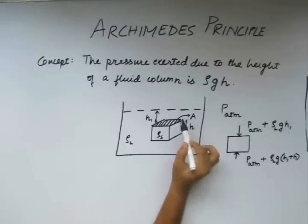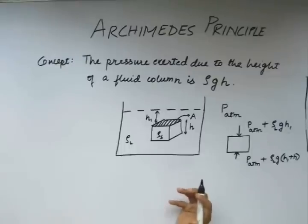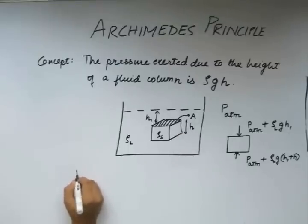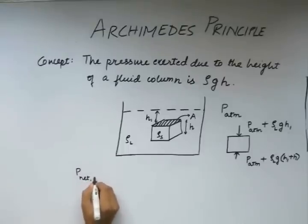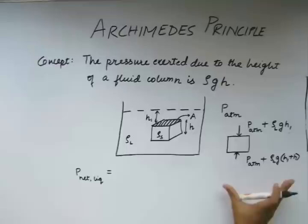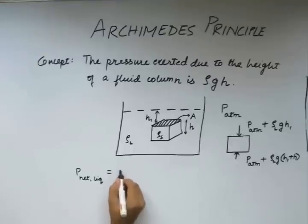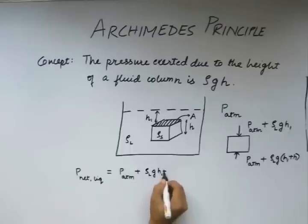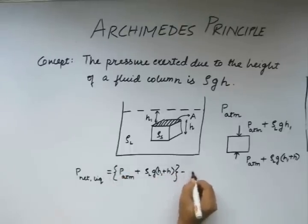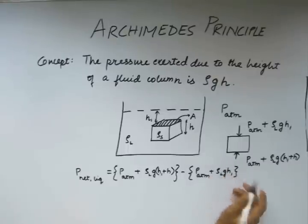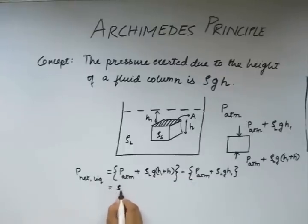The block has a cross sectional area. So if we consider the net pressure on this block in the transverse direction, the net pressure by the liquid is going to be this quantity minus this quantity. Because we are considering the upward direction as positive, we will have this minus this. This gives us, on simplification, this.